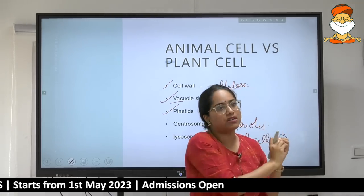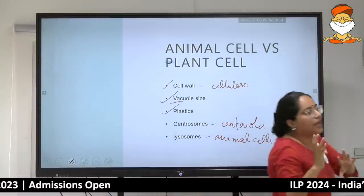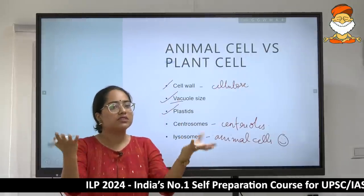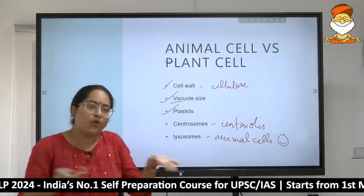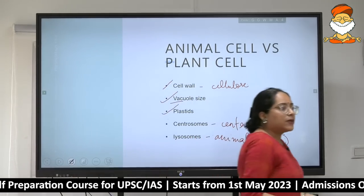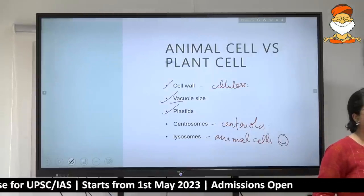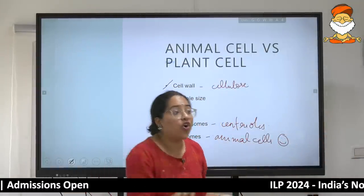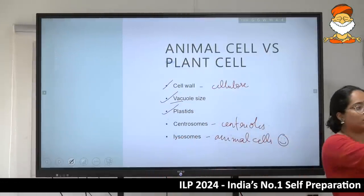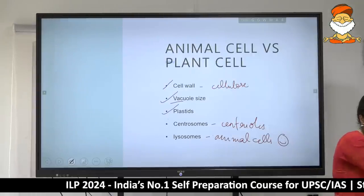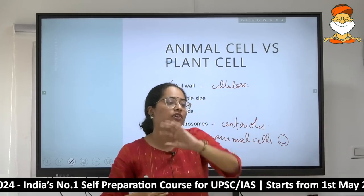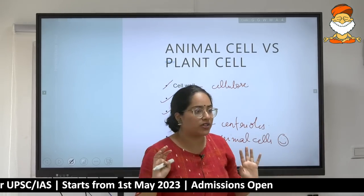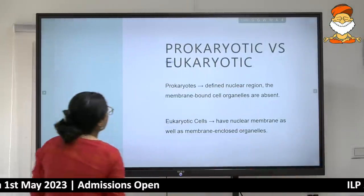Similarly in plant cells, genetic material is stored in two particular organelles. The nucleus is the obvious first answer. The second is the chloroplast — which has the same function as the mitochondria in animal cells. There is a similar division: almost 99% in the nucleus and less than 1% in the chloroplasts.